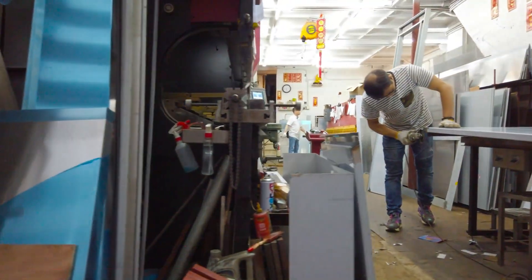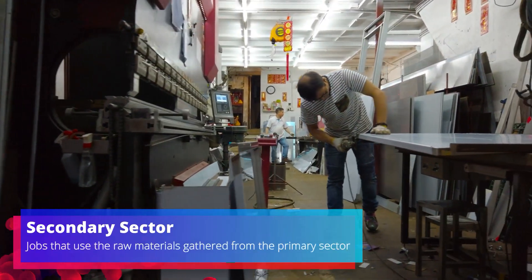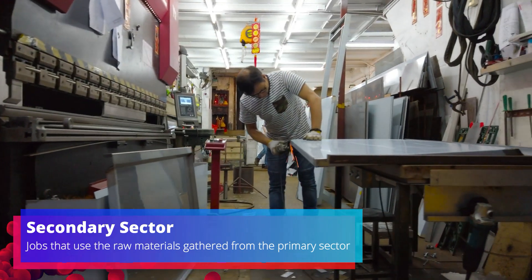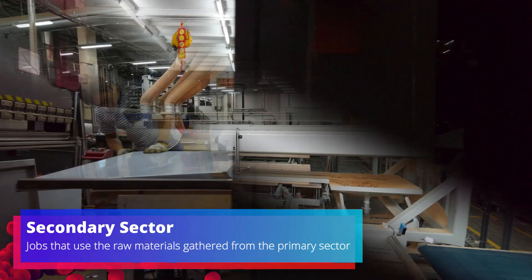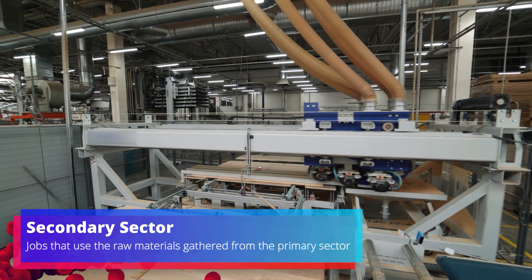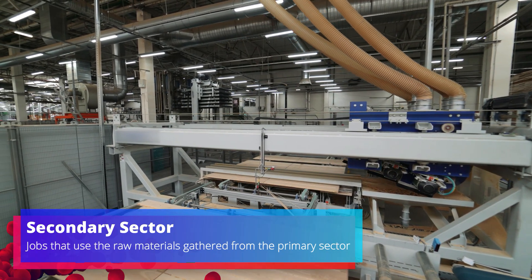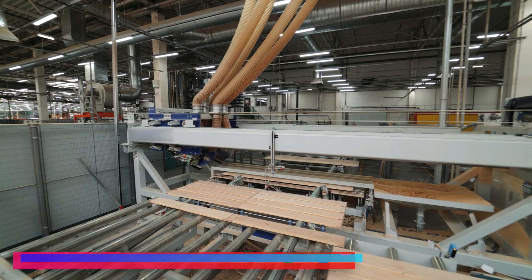The next classification is the secondary sector. These are jobs and activities that use raw materials gathered from the primary sector and manufacture them into products of greater value. An example here would be processing wheat into flour or using lumber from cut-down trees to make plywood. The location of where this production will happen will vary depending on the cost of transporting the raw resources and the final product to the market.